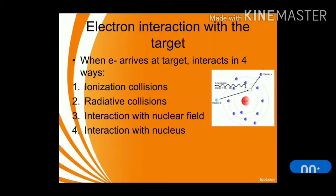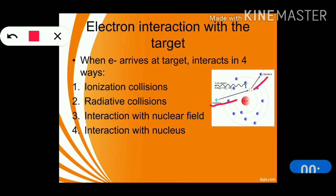Hello students, today's topic is electron interaction with the target. When an electron interacts with the target — whether it is an electron or a nuclear field — it interacts in four ways: one is ionizational collisions and the second one is radiative collisions.